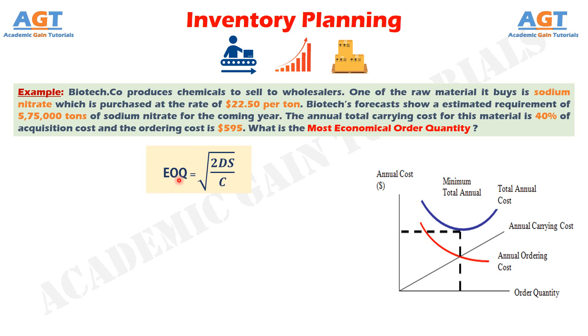The formula for calculating Economic Order Quantity is: EOQ equals the square root of 2 multiplied by the annual demand D, multiplied by the ordering cost S, divided by the carrying cost C.